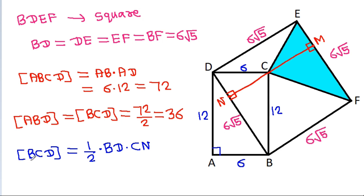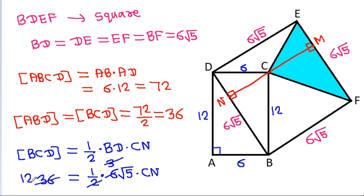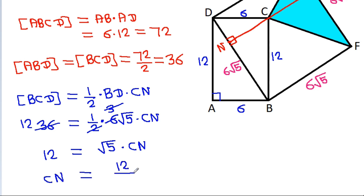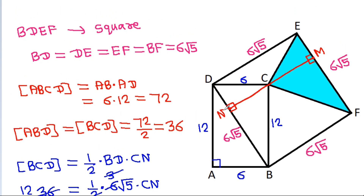Area of BCD is 36, which equals one-half times BD (which is 6√5) times CN. Solving for CN, we get CN equals 12/√5.